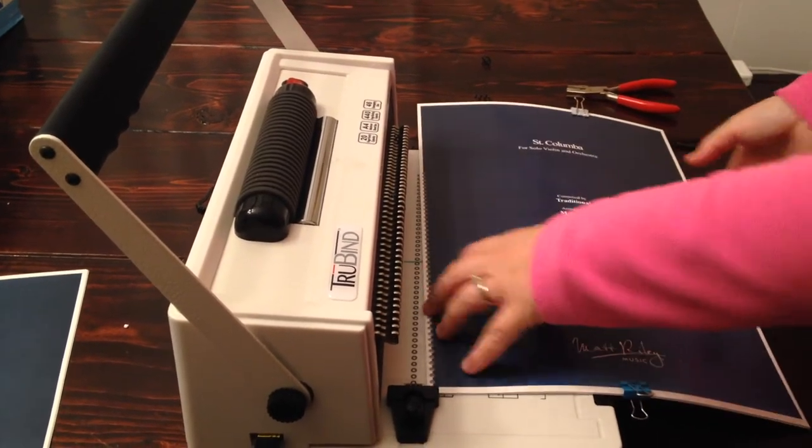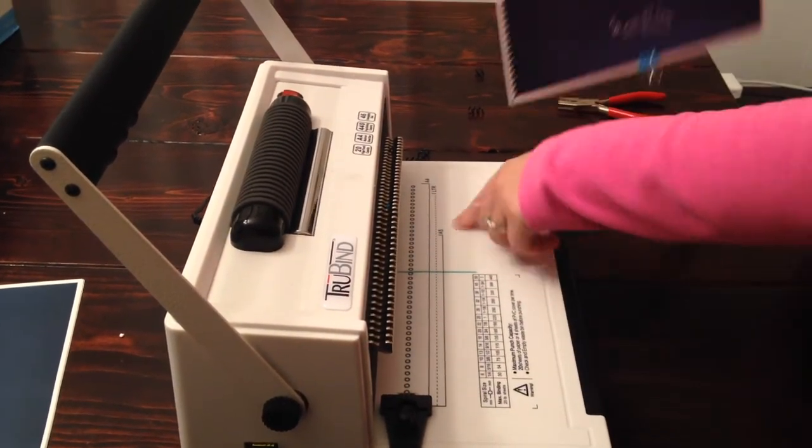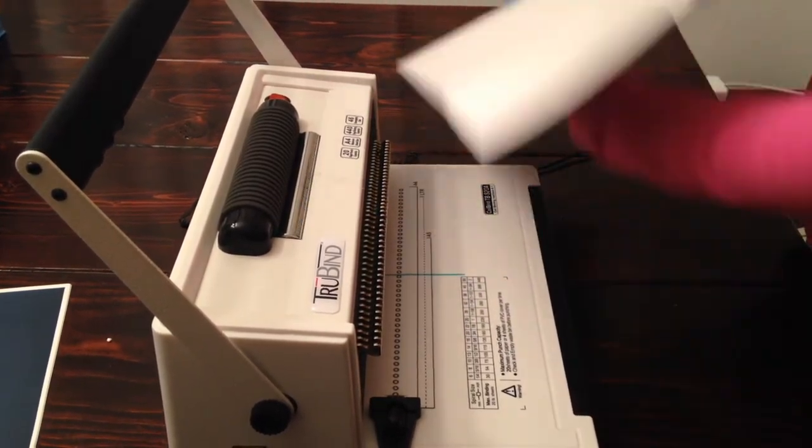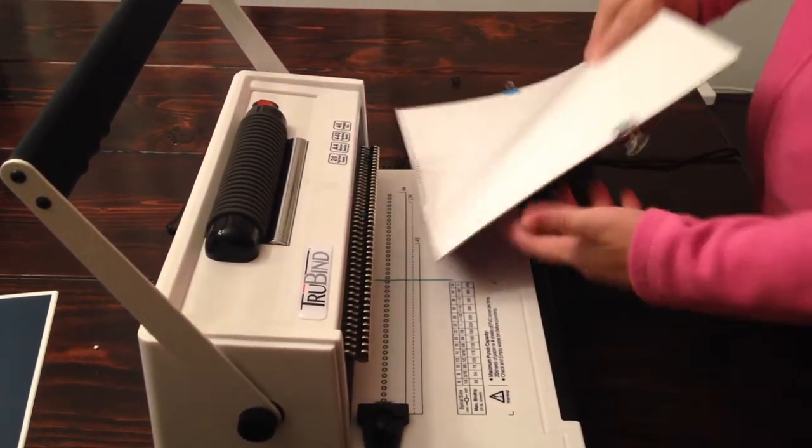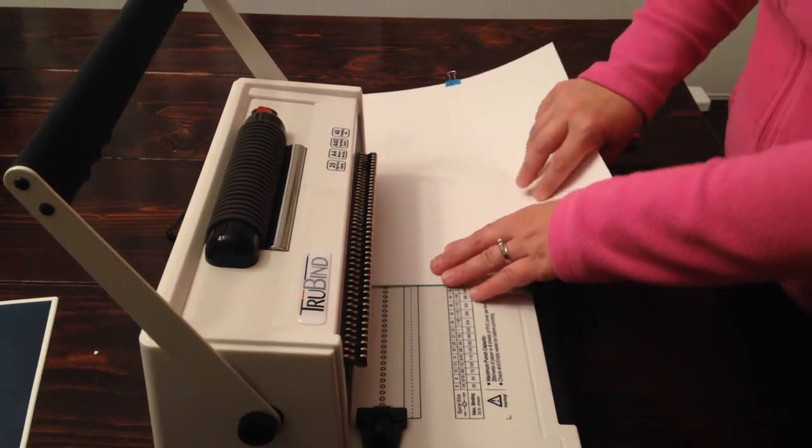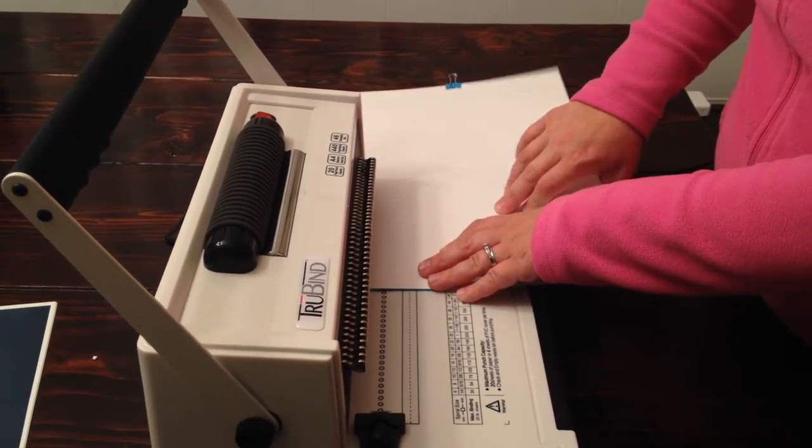Pull it out, flip it around. Most coil binding machines are closed here so you can't flip it around, but this one is open and you can flip it around all the way, so you can do unlimited sizes almost.